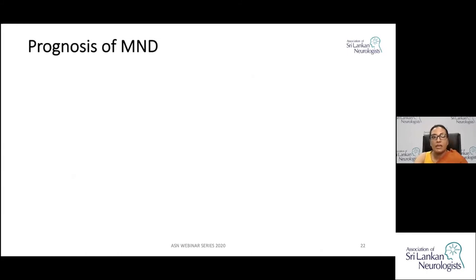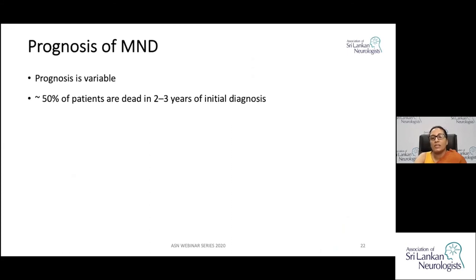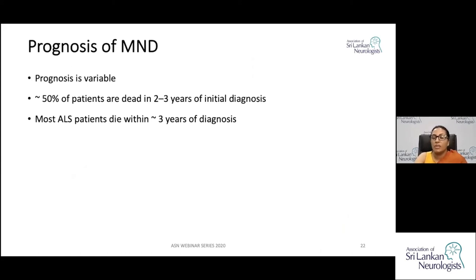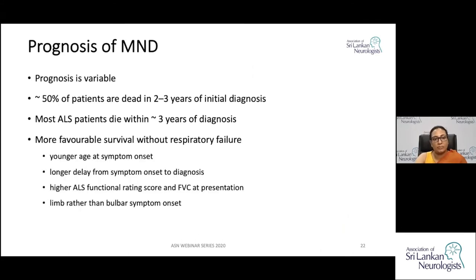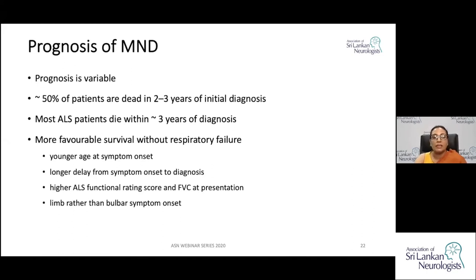The prognosis of MND is variable across its subtypes. Generally, 50% of patients are dead within two to three years. In ALS, most patients die around three years from diagnosis. Favorable prognostic factors include younger age at symptom onset, longer delay from onset to diagnosis (indicating slower progression), higher functional rating scores, higher forced vital capacity at presentation, and limb onset rather than bulbar onset.